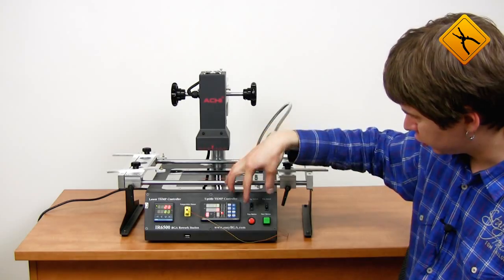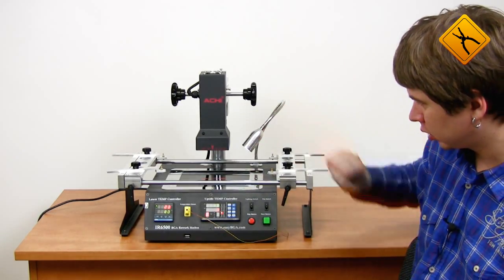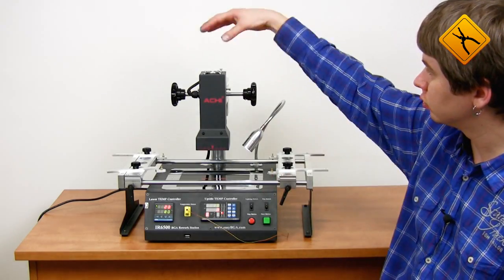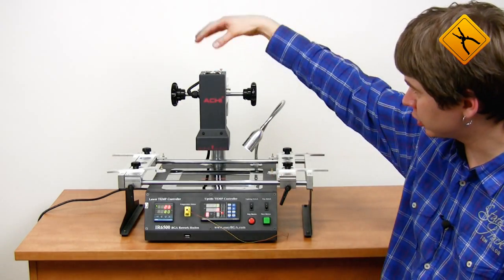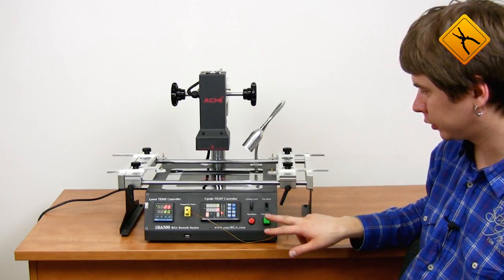There is also a button for turning on the lamp and a button for turning on the cooling fan situated on the upper heater, as well as two buttons to start and stop the soldering process.